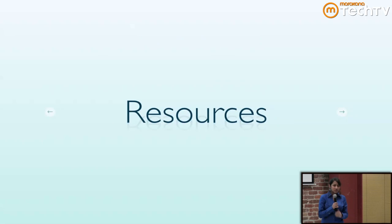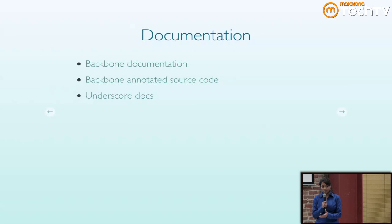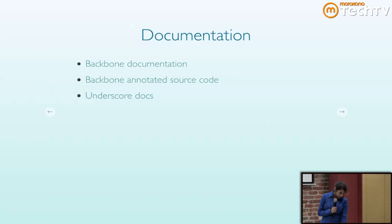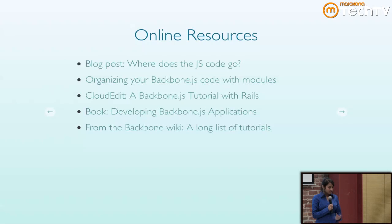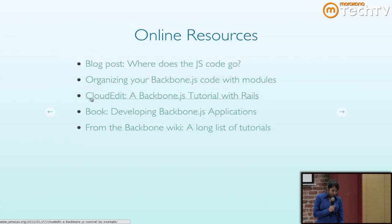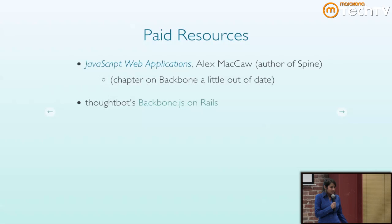There are a lot of resources online to get to know Backbone. There's documentation and the annotated source code, which is where I recommend starting — it's well written and easy to read — and also the Underscore documentation. There are a lot of tutorials online, including a neat blog post about where the JavaScript code goes, and a couple of really neat tutorials to follow instead of the usual to-do app. CloudEdit is sort of a Google Docs app, quickly written up in Backbone. There are also a couple of paid resources: you can buy a book or access an online book.